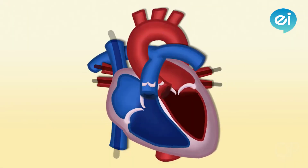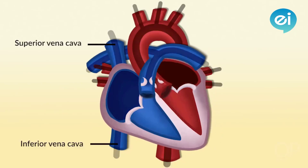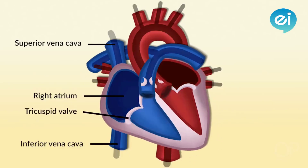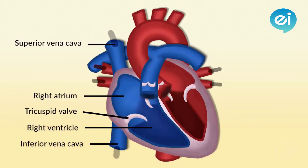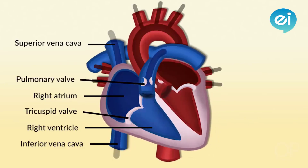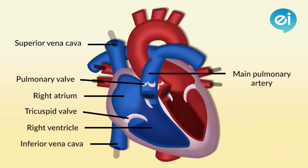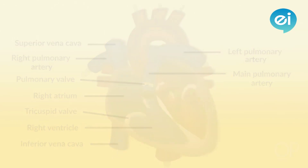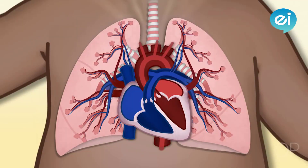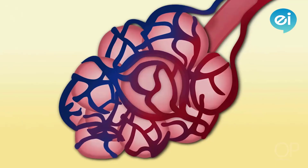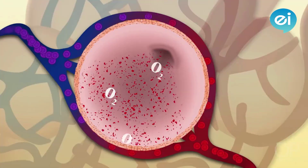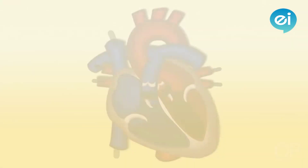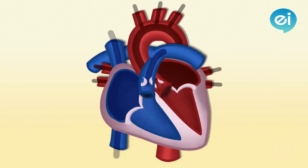The right side of the heart receives venous blood from the body through the superior and inferior vena cava, which enter the right atrium. Blood flows through the tricuspid valve into the right ventricle. Blood leaves the right ventricle through the pulmonary valve into the main pulmonary artery. The pulmonary artery divides into the right and left pulmonary arteries to transport deoxygenated blood from the right side of the heart to the lungs, branching further into the pulmonary capillary bed where oxygen and carbon dioxide exchange occurs.